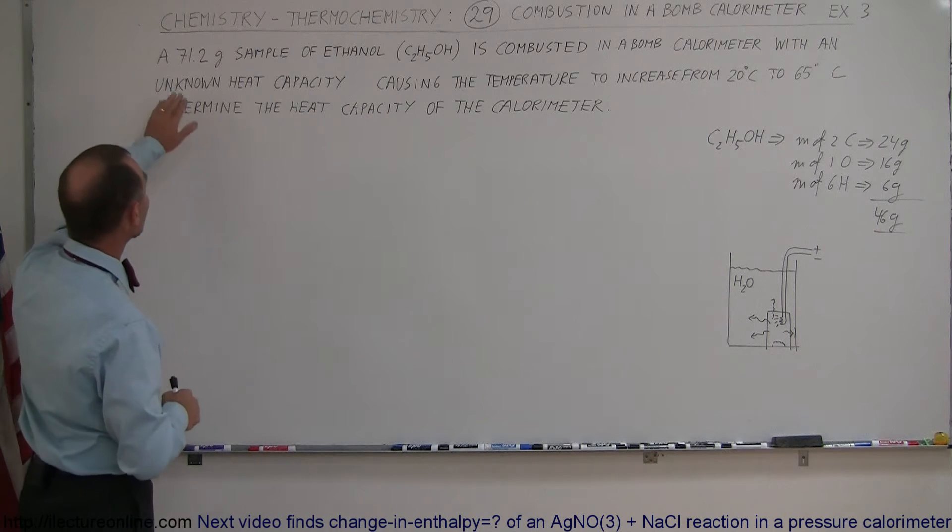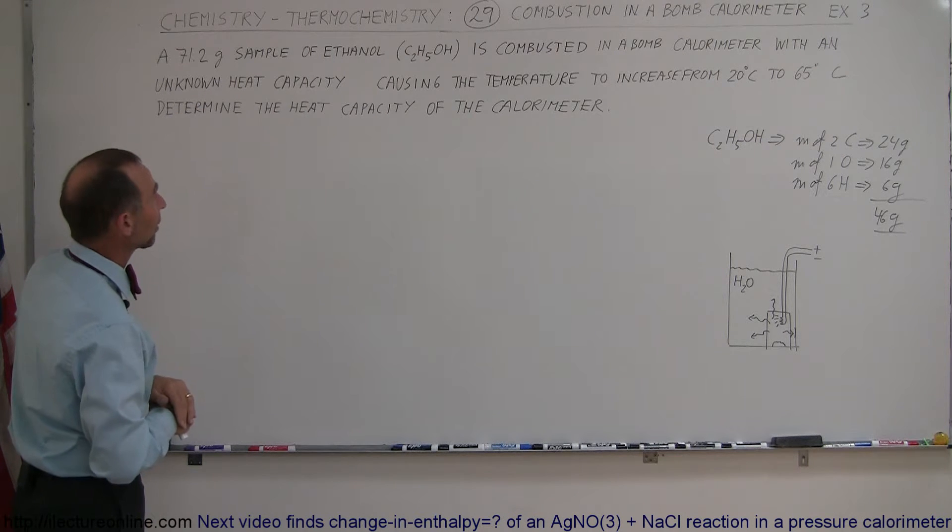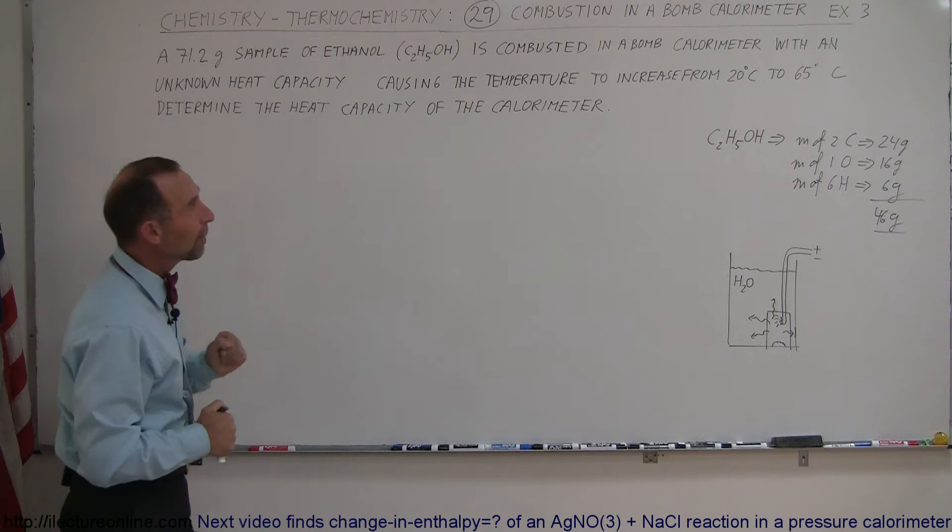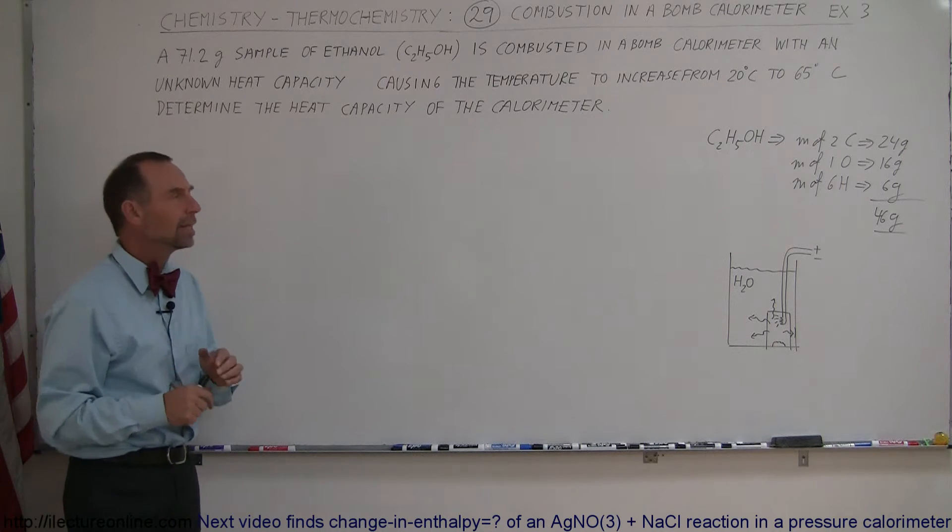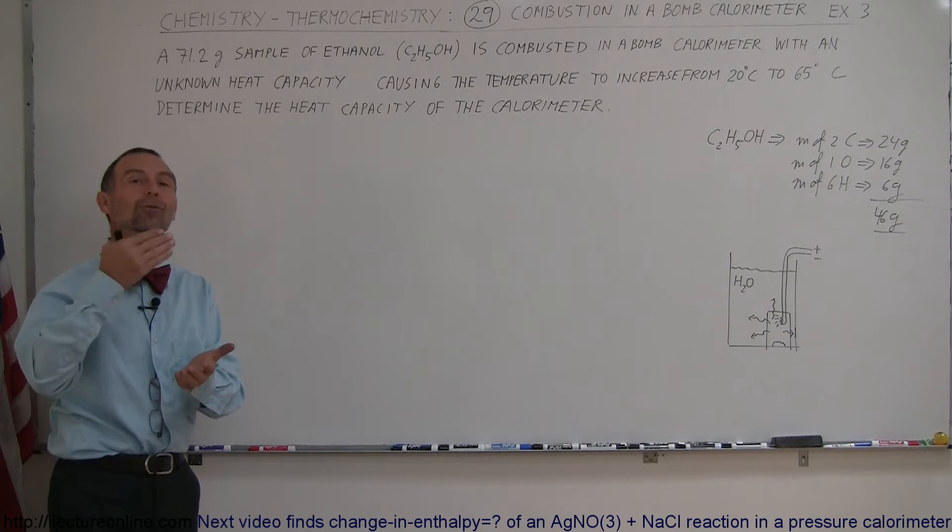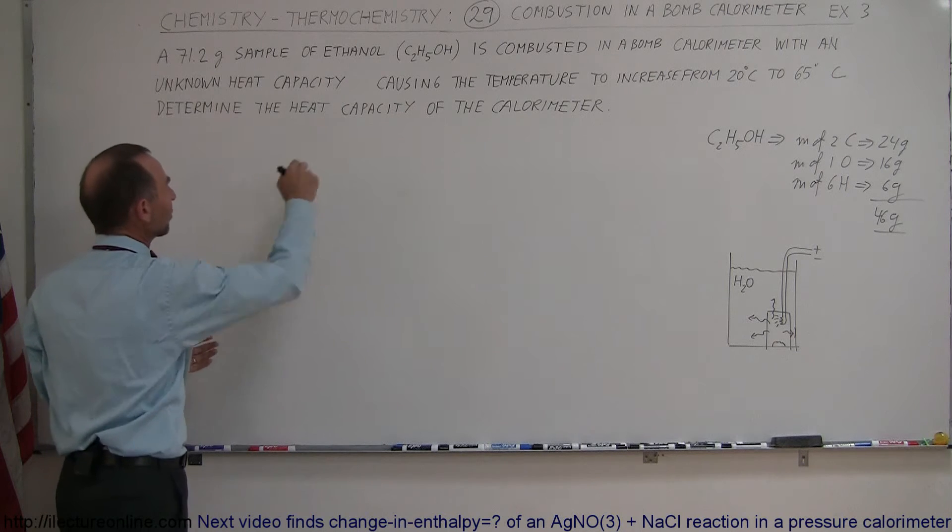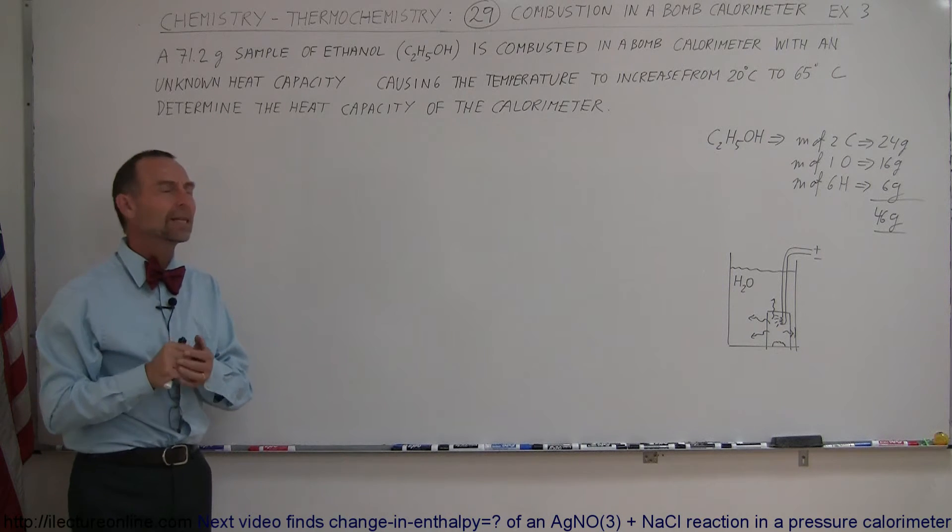Now what we're doing here is we're taking a 71.2 gram sample of ethanol and we combust it in a bomb calorimeter with an unknown heat capacity. So we don't know the heat capacity. What we're trying to do here is determine that heat capacity, which is ultimately what they're telling us to do.